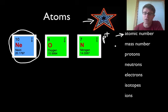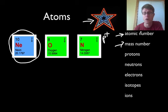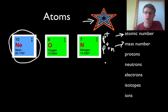The next thing we have is the mass number. The mass of an electron is really, really small — it doesn't weigh much. So the mass number tells us the mass, or the number of protons we have plus the number of neutrons that we have.